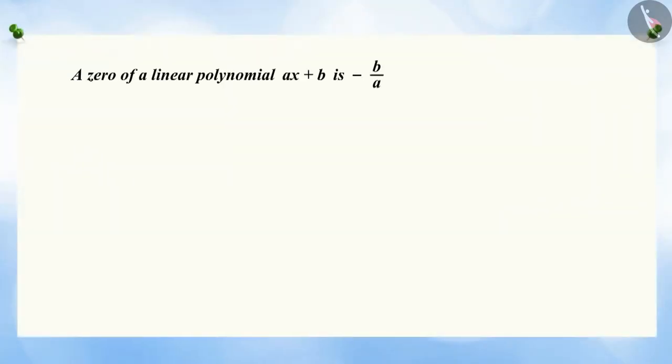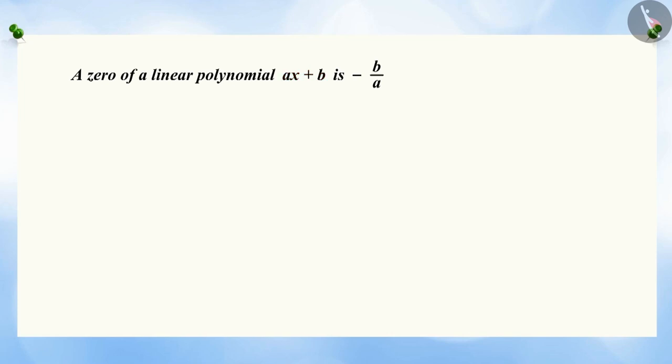In your previous class, you have learned that a zero of the linear polynomial AX plus B is negative B by A.